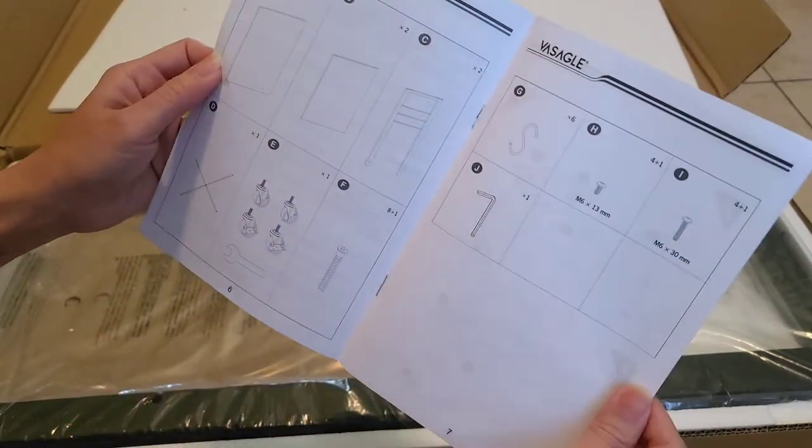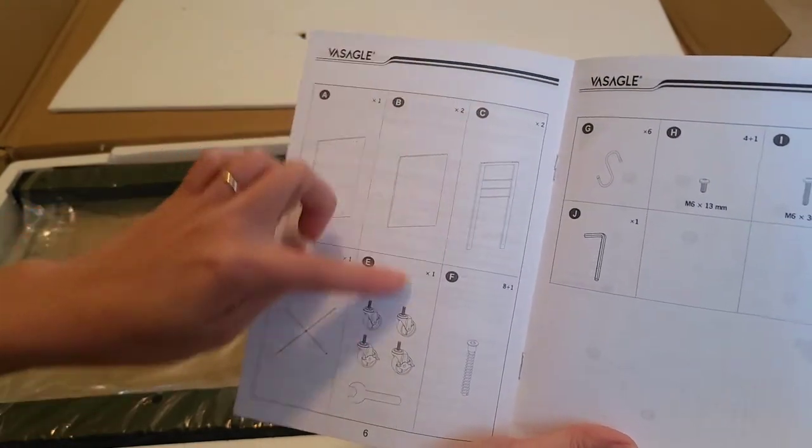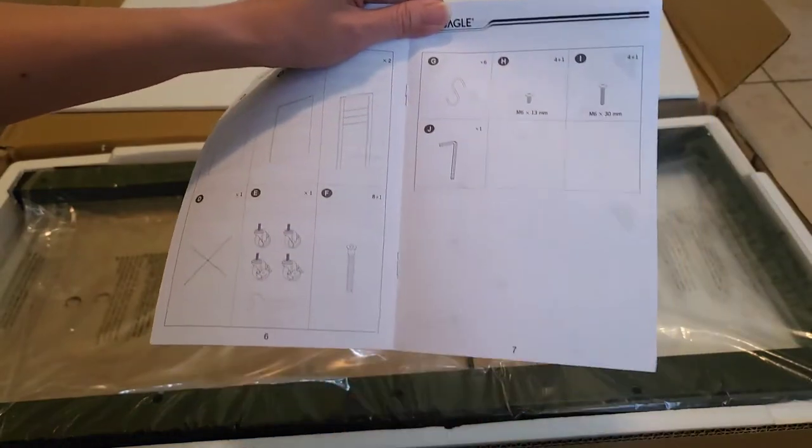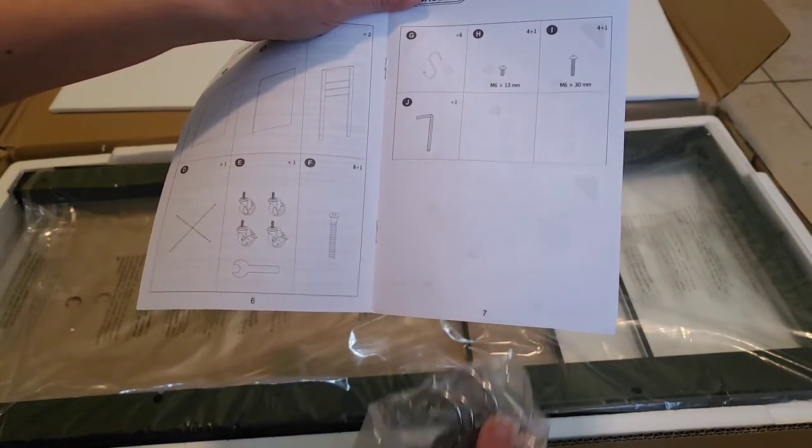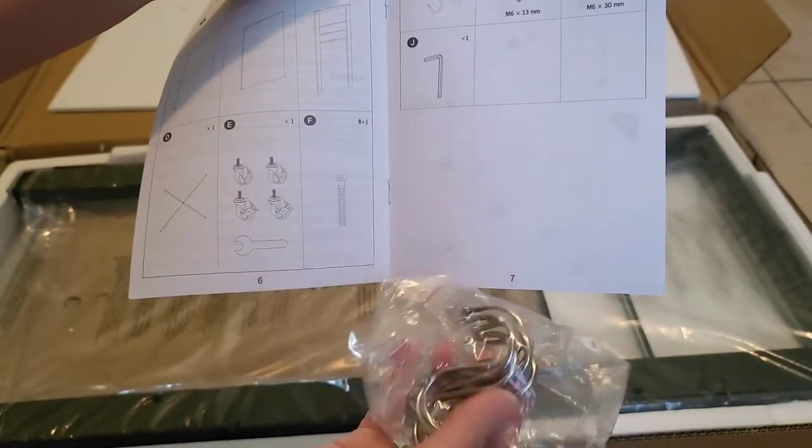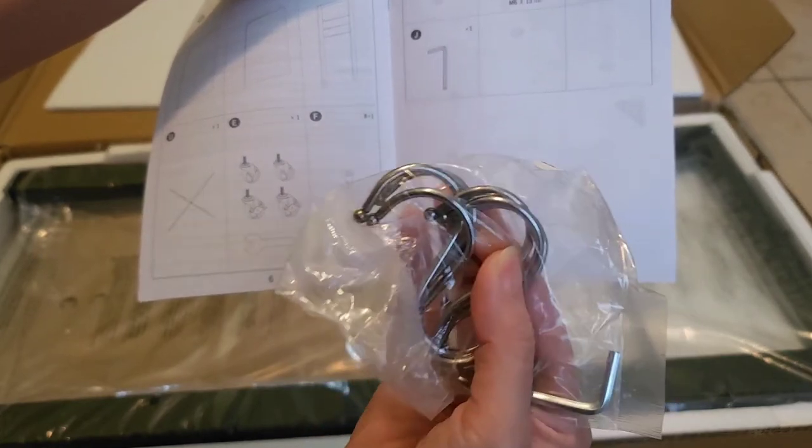It will have instructions, so let's check if they send us enough supply. So J, there's one J right here, I and J, and six of them. Okay, six of them, enough.